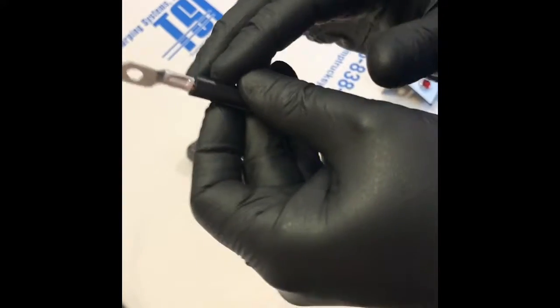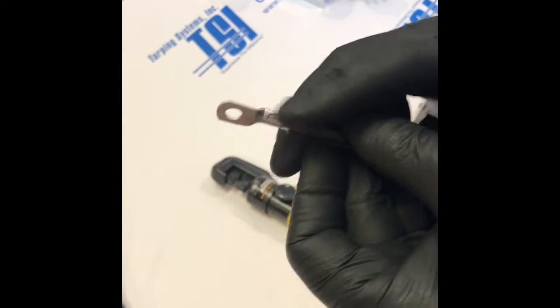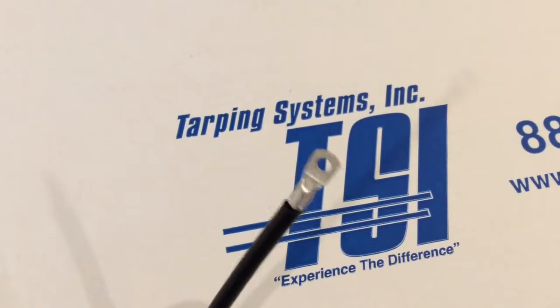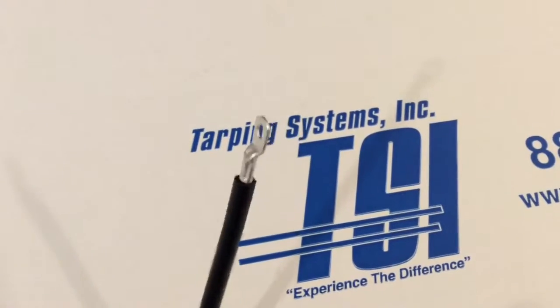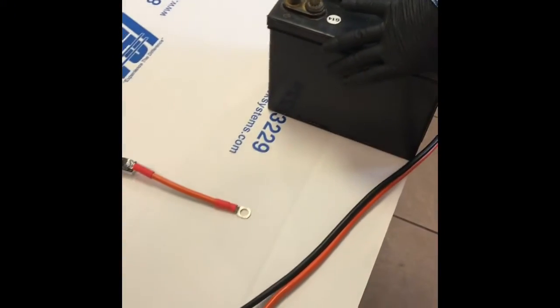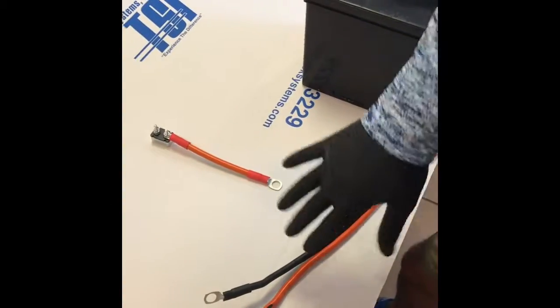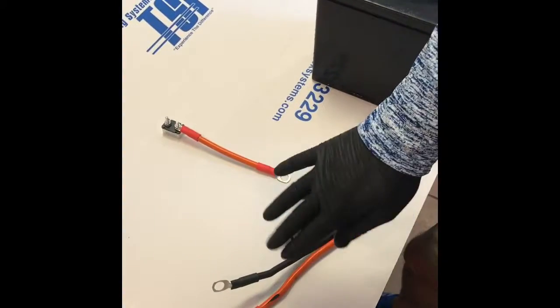When we crimp it, we just want to make sure our crimp is parallel with the blade of the ring terminal and that we don't have any bare copper or strands sticking out of the bottom. Now for time and not to bore you, we've gone ahead and made up all our terminal connections and heat shrunk them.